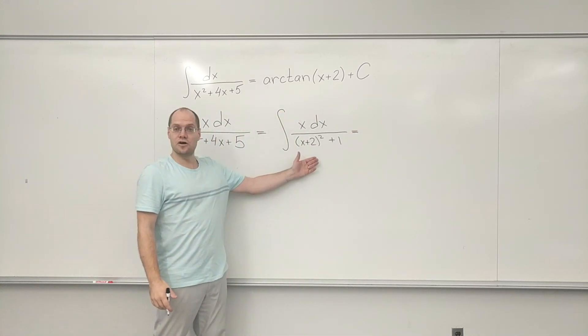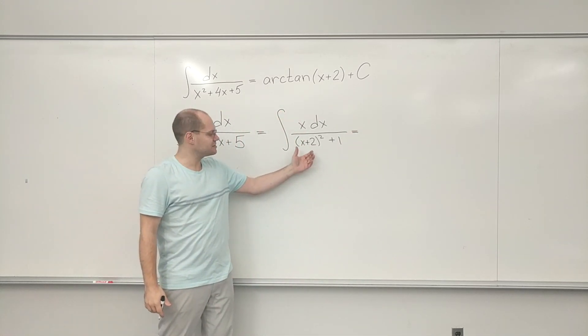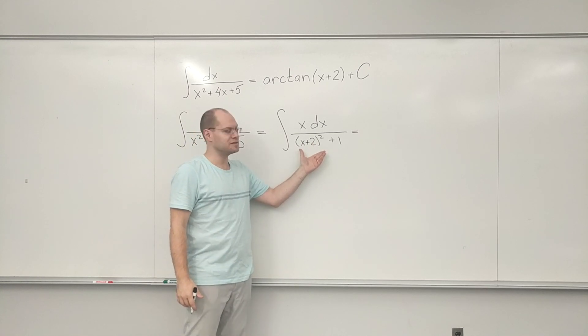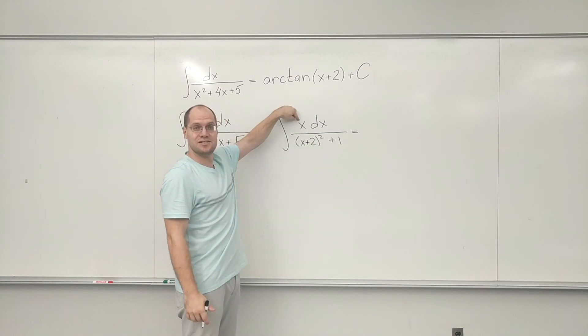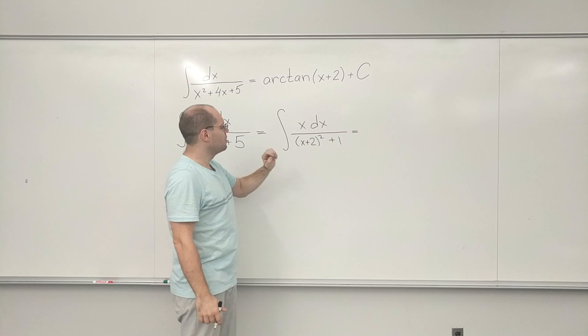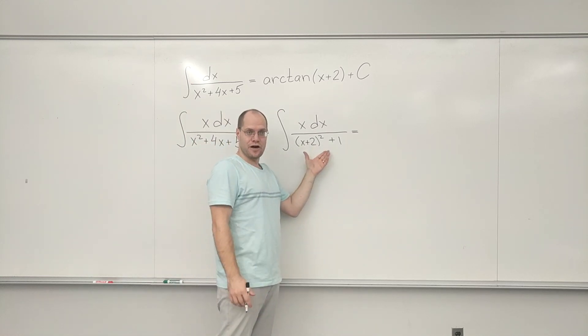So now I can no longer recognize arc tan, because it's not just 1 plus something squared on the bottom. There's actually x on top. So at first sight, I will go for arc tan, and then realize that I have to reject that direction.